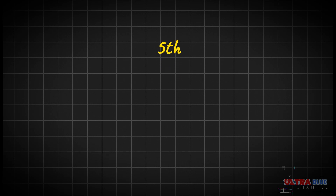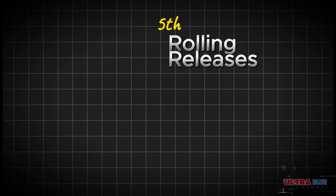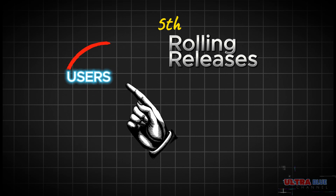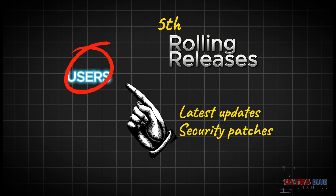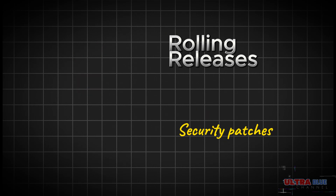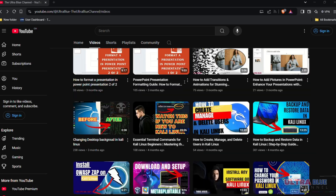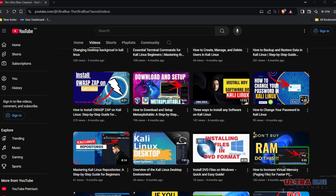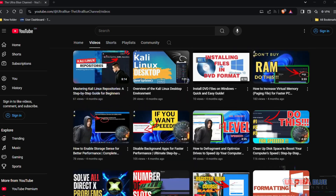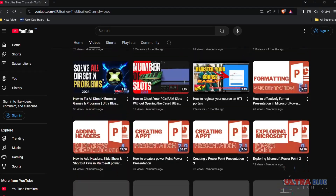The fifth feature is its rolling release model. Kali Linux ensures users always have access to the latest updates and security patches. We have a full guide on the best way to download and install Kali Linux here on the Ultra Blue channel — feel free to check it out.